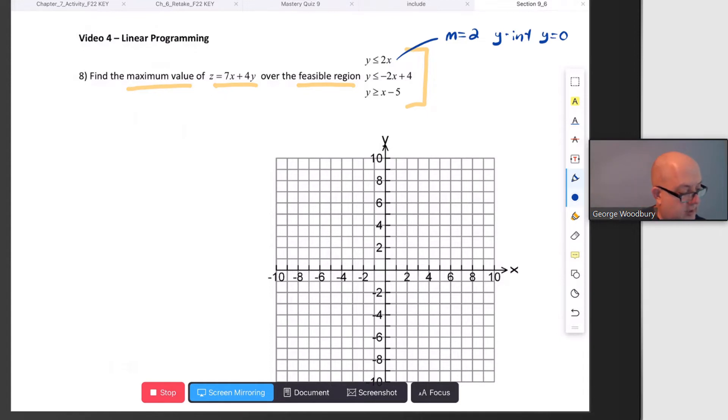the y-intercept is at y = 0. Starting at 0, up 2 over 1, and as we go to the left, down 2, 1 to the left is the same as up 2, 1 to the right. There's our first line, and we're looking for it to be below that. We are on this side of the line. Y is isolated, where is y less than that? It's below that.